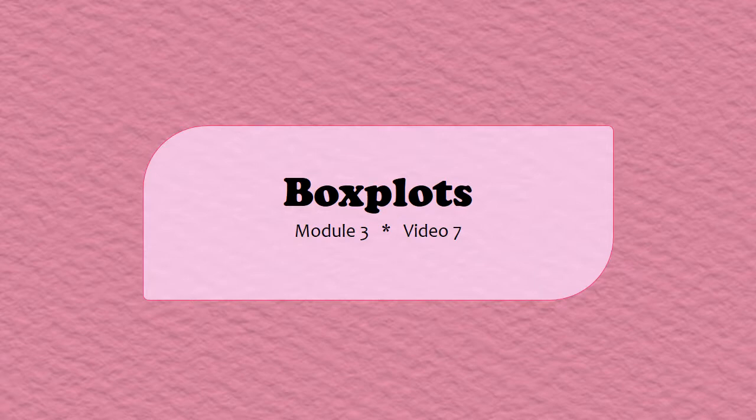Hello! Welcome to Video 7 of Module 3, Box Plots. In this video, we'll begin with a brief review of finding a five-number summary, as well as using the IQR method to identify outliers. Then, we'll slow down a little bit and talk about how to create a box plot. So let's get started.